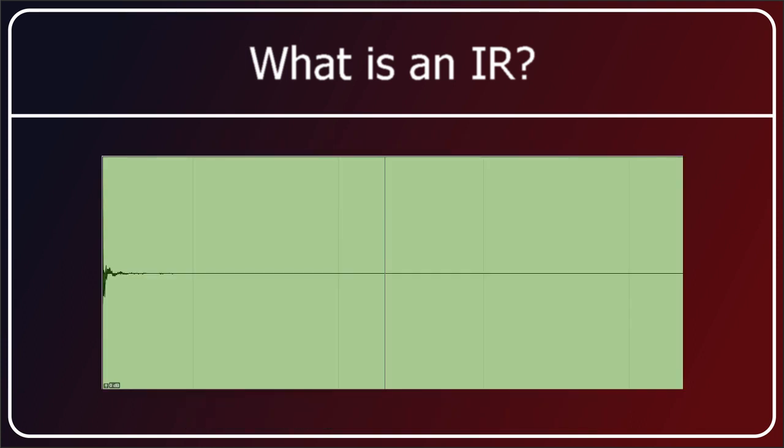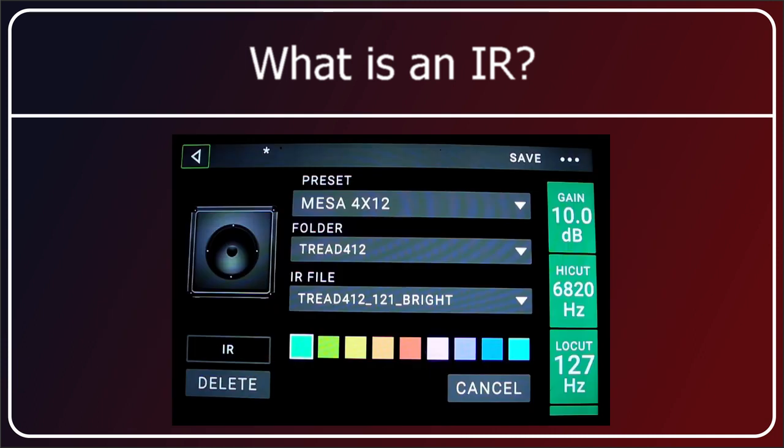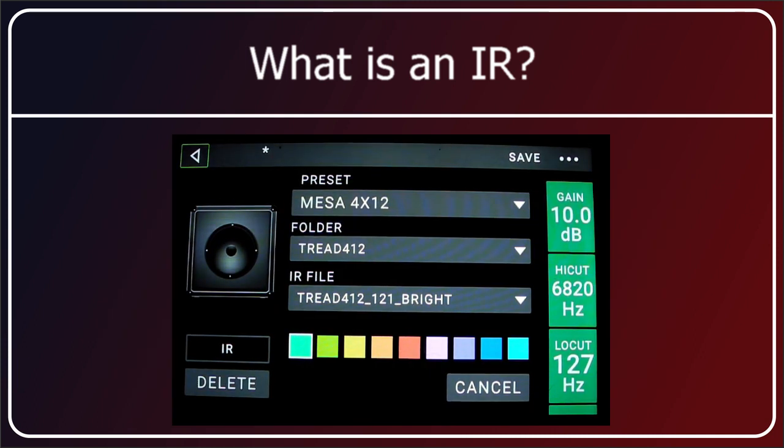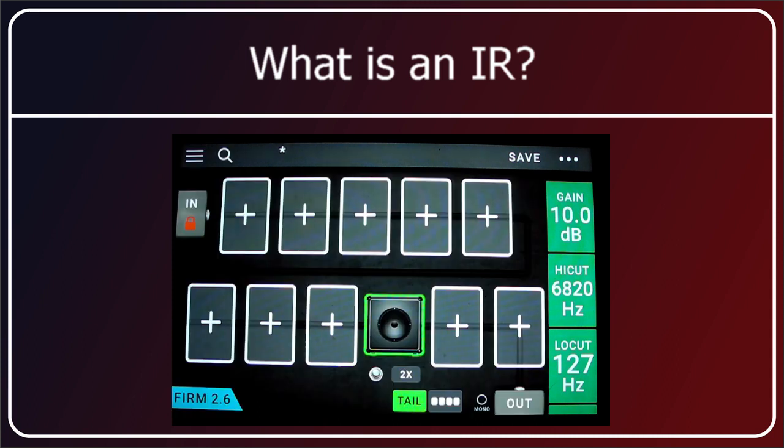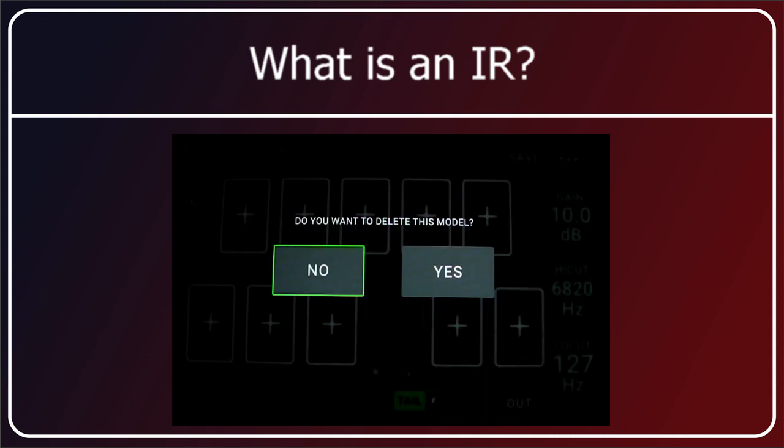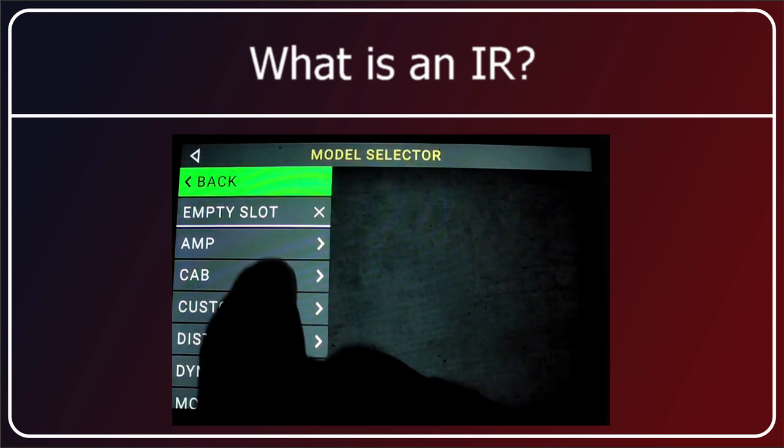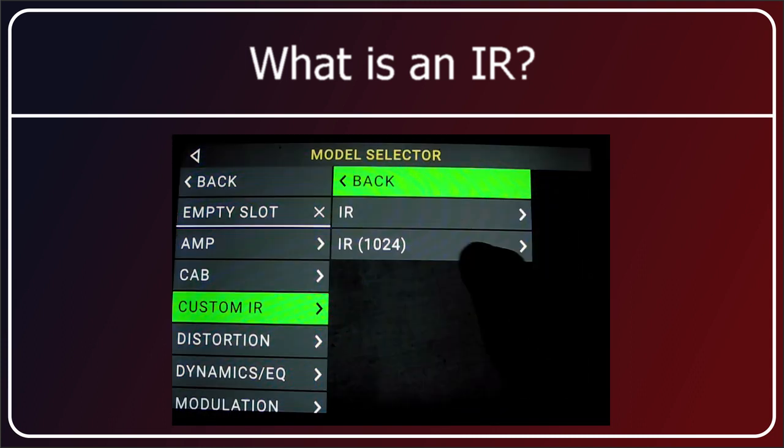When you buy an IR it comes as a WAV file, that's how the IR loader in the head rush or standalone IR loaders like to receive them. They come in various bit rates, 24, 48, 96 obviously the higher the bit rate the more detail, 48's fine.